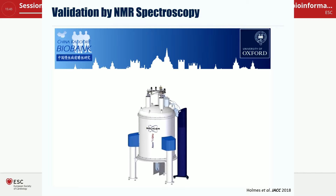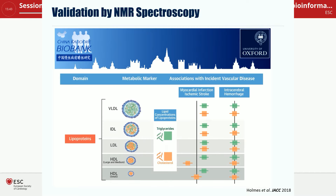I would like to highlight a paper from a group in Oxford — first author is Michael Holmes — who looked in the China Kadoorie Biobank on lipoproteins by another technology: NMR spectroscopy, nuclear magnetic resonance spectroscopy. This allows very fast throughput analysis of plasma lipoproteins. It doesn't give the same detailed information as mass spectrometry in terms of APO-lipoprotein composition, but it gives you the different lipoprotein classes, and this will now be done in the UK Biobank in half a million people.